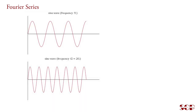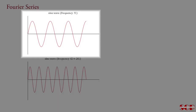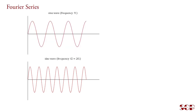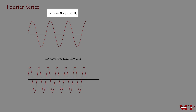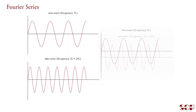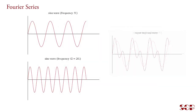Now consider two sine waves. This is sine wave 1 and this is sine wave 2. Sine wave 1 has frequency f1 and sine wave 2 has frequency f2 equal to 2f1. If they are superimposed on each other, the resultant wave produced is of this type. You may obtain this resultant wave by vector addition of the amplitudes of the individual waves.